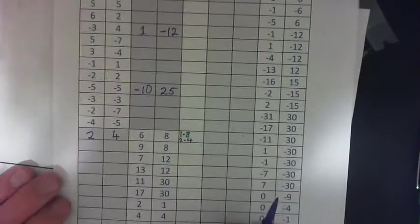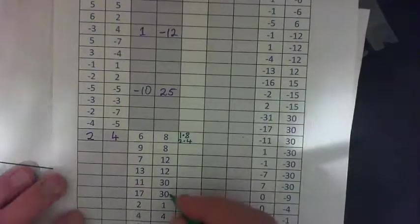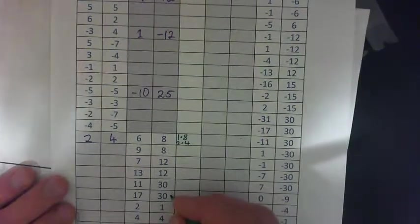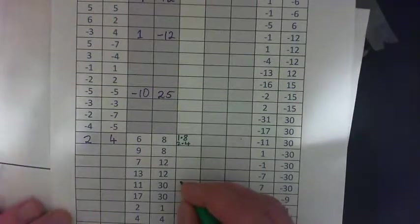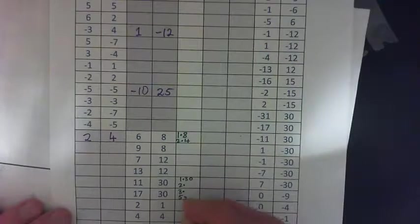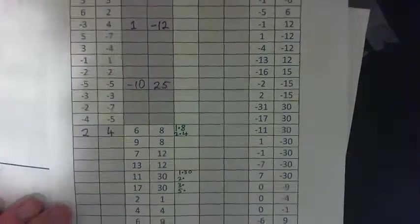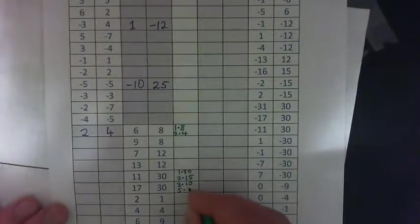I'll just do this one for fun. What two numbers add to 17 and multiply to 30? List the pairs of factors of 30: 1 times 30, 2 times 15, 3 times 10, 5 times 6, and so on.